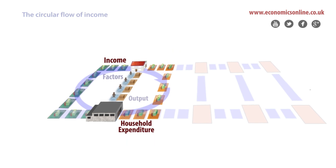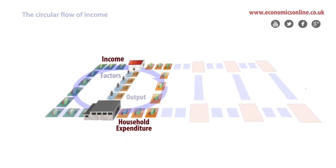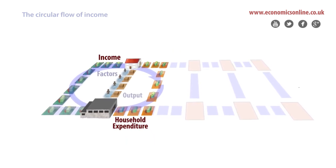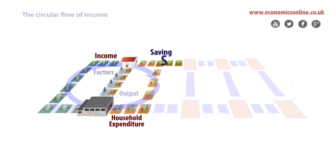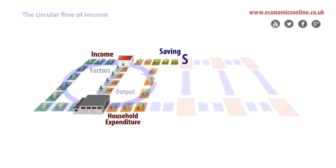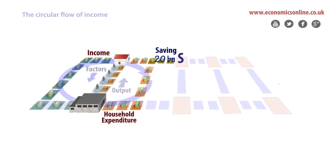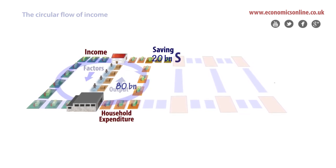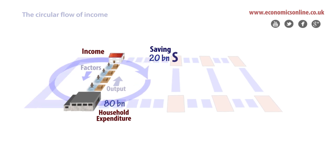Each time income circulates between firms and households, it creates jobs, spending, and output. However, some income may leak out of the circular flow in the form of savings. This reduces the amount of spending which continues to circulate. For example, if 20 billion is saved, then only 80 billion continues in circulation.